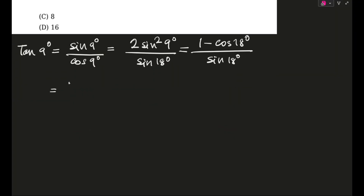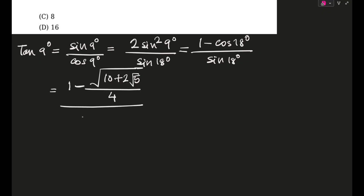This is nothing but 1 minus — and I hope you all remember these values — cos 18 degrees is root(10 + 2√5) divided by 4, and sine 18 will be (√5 − 1) by 4. So with a little bit of manipulation, this will come out to be 1 minus of root(√5) into (√5 + 1).